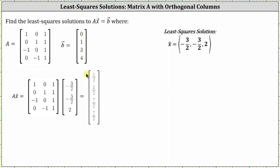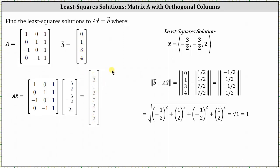So the next question is: how close is the vector (1/2, 1/2, 7/2, 7/2) from the vector (0, 1, 3, 4)? We can determine this by finding the magnitude of the difference of vector B and the vector resulting from matrix A times vector x̂. The result is equal to the square root of one, or one, which indicates the vector (1/2, 1/2, 7/2, 7/2) is one unit from the vector (0, 1, 3, 4). When we refer to how far two vectors are from each other, we're determining how far the terminal points are from each other.